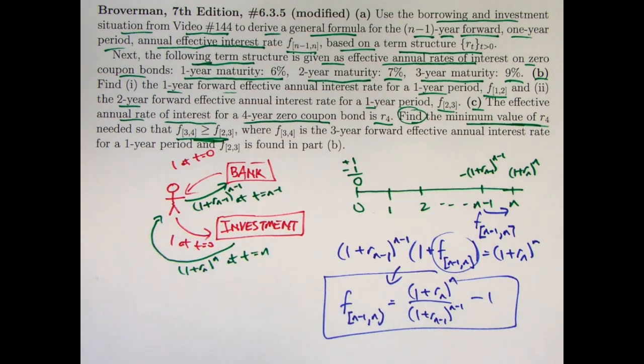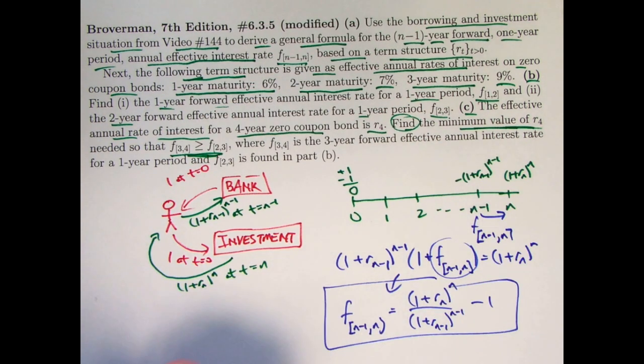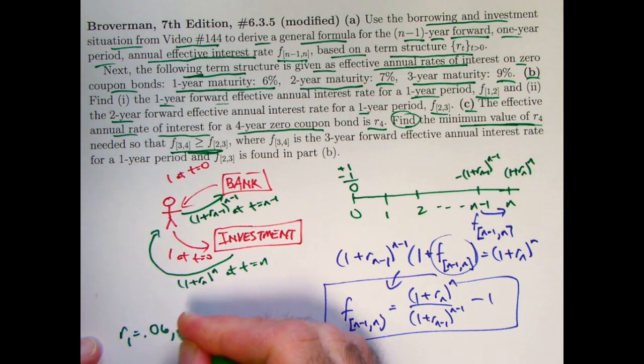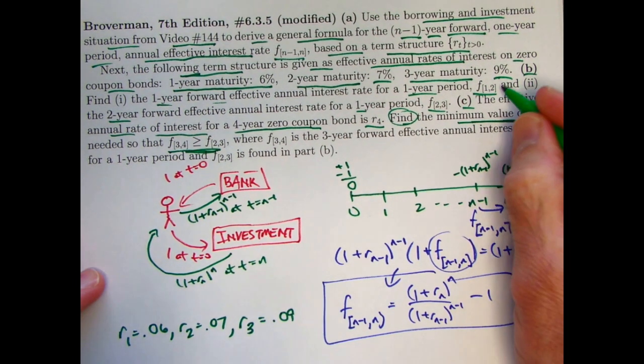All right, on to parts b and c, and these go pretty quickly here now, that we've got the general formula. And we've got these spot rates here, 6%, 7%, 9%. We are given those r1 is 0.06, r2 is 0.07, r3 is 0.09. We now use those to first find f12, this forward rate, one-year forward effective annual interest rate for a one-year period.